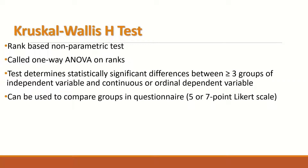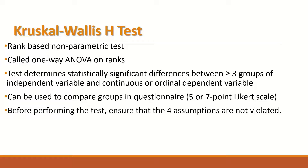An example of an ordinal dependent variable is a Likert scale. The test can be used to compare groups in questionnaires with five or seven point Likert scales. I have already uploaded a video clip describing the Likert scale — follow the link to my channel if you want to learn more. This test can be really useful for those conducting surveys and questionnaires who want to analyze non-parametric data.